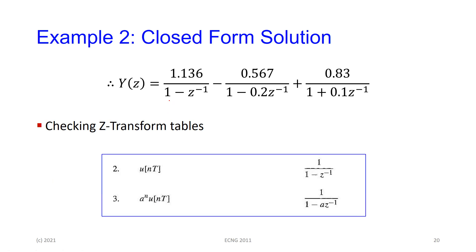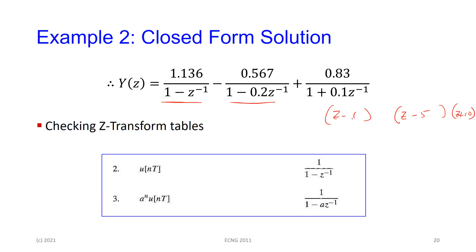Once you get the partial fractions, you go to your tables. You'd have something like Z to the minus one minus 5 as one factor, and Z plus 10 as another, and you'd get your answer. But you're going to have to convert it back — from, say, Z minus one minus 5 to the form one minus 0.2 Z to the minus one. So you need to get it back into that form, then check your tables and write out the closed form solution.